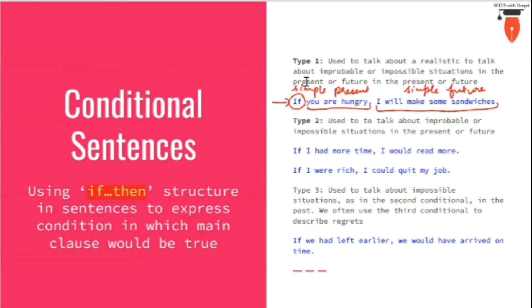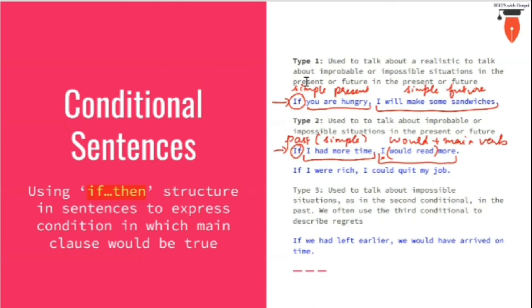Let us look at the second type. In the if clause we use simple past tense, and in the then clause we use the subject with 'would' and the main form of the verb — so the construction is 'would plus main form of the verb.' For example: 'If I had more time, I would read more.' And 'If you read for your exam, you would pass.' Both sentences use simple past in the if clause, and 'would + main verb' in the then clause.